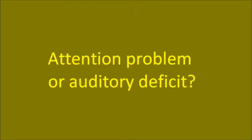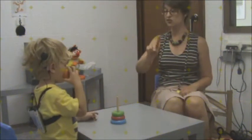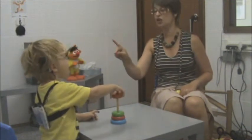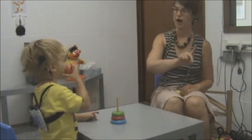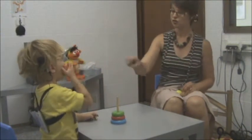The best way to find out what is happening is to present a stimulus yielding a good response previously. If the child doesn't react properly, the show is over. If he or she shows a similar good response, we can decide that there was a true auditory problem.